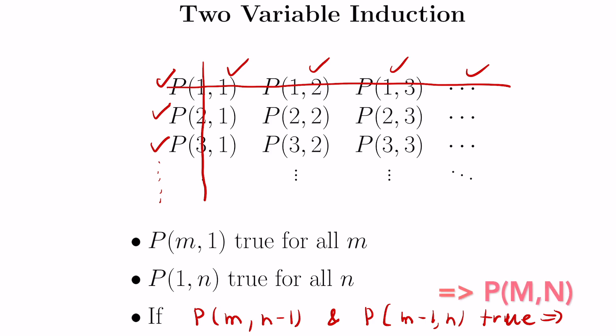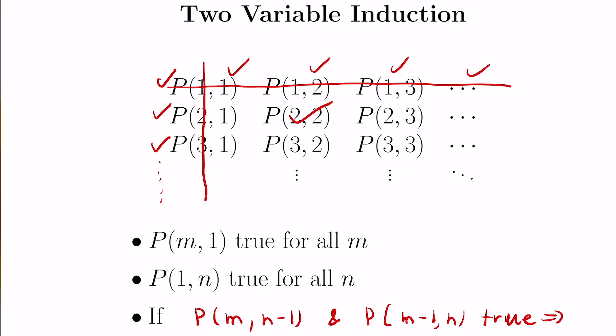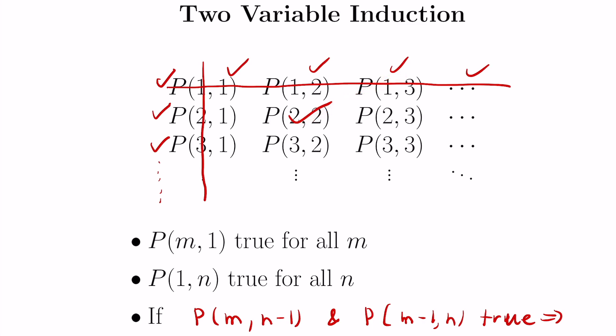With all three of those conditions, you get a cascading effect where every single statement indexed by pairs of positive integers is actually true. To see why: if we want a statement P(m, n), reducing the left coordinate by 1 gives one statement, and reducing the right coordinate by 1 gives another. Those two together imply the one we want, and continuing this reasoning establishes every statement in the entire array.